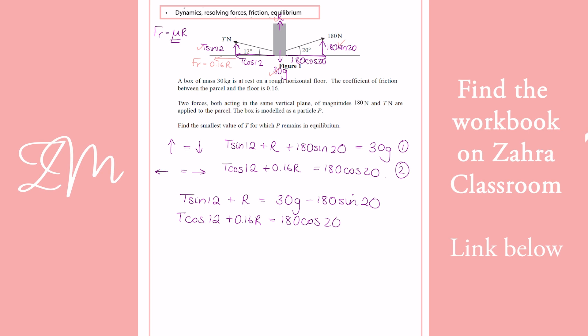Now, we want the X value, so your smallest value of T is 139.652 dot dot dot dot dot. So we're just going to say 140 newtons. And that would be your smallest value of T for which it remains equated to each other. I hope that makes sense.